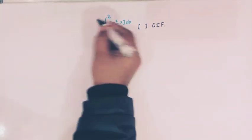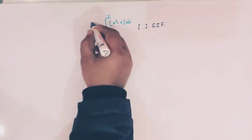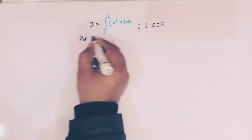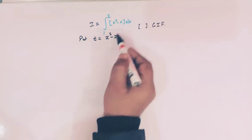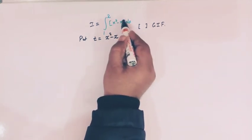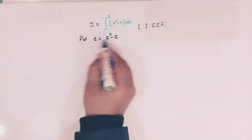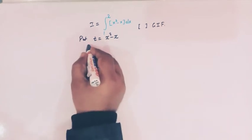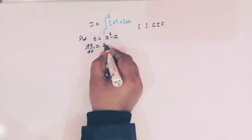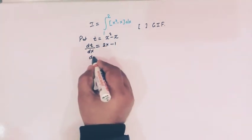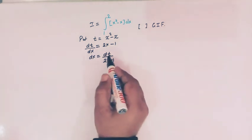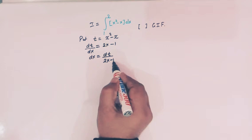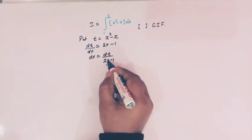Let us call this integral as I. We will use the method of substitution. Let t equal to x squared minus x, which is the quantity inside the greatest integer function. Differentiating both sides, dt/dx equals 2x minus 1, so dx equals dt over (2x minus 1).